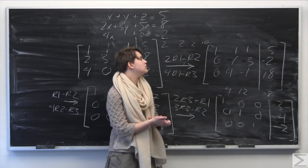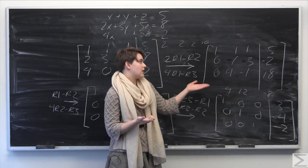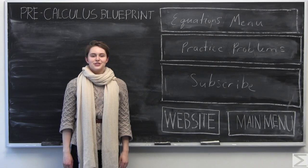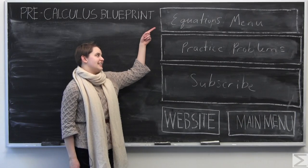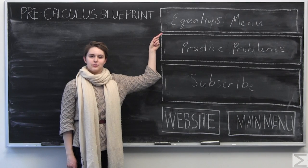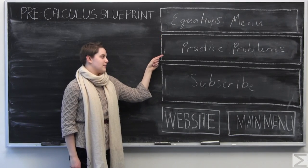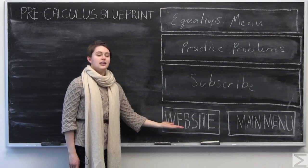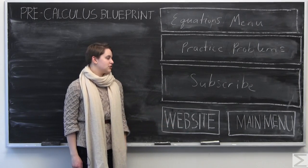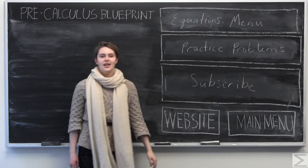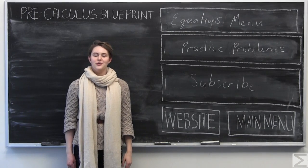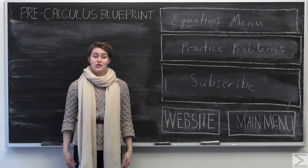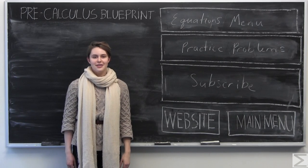That's the method of Gauss-Jordan elimination that we use to put a matrix into reduced row echelon form. To return to the equations menu, click here. To see additional practice problems worked out, click here. To subscribe to our YouTube channel, click here. To visit our website, click here. To return to the main menu, click this link. And as a reminder, you can purchase the precalculus blueprint by clicking on the link in the description — it's only $1.95. Thank you for watching.